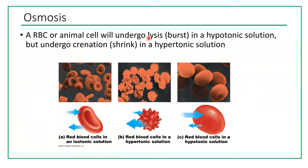Osmosis is important for biology and especially for human physiology. Think about your red blood cells — they are surrounded by fluid called plasma. It's very important for red blood cells to be in isotonic solution so water moves in and out and they stay healthy and can perform their functions.